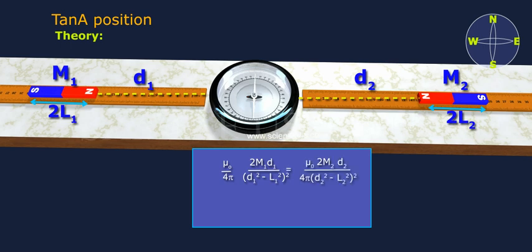M1 by M2 equals D1 square minus L1 square whole square by D2 square minus L2 square whole square equals D2 by D1.